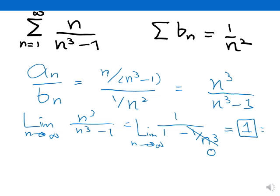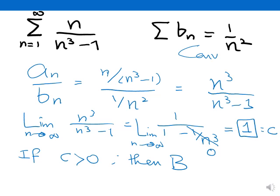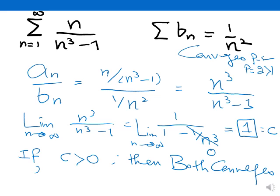This constant c turned out to be equal to 1. Since c is greater than 0, the rule tells us that both series either converge or diverge. I know that sigma 1 over n squared is a convergent series because it's a p-series with p equal to 2. Therefore both series converge. This result comes from the limit comparison test.